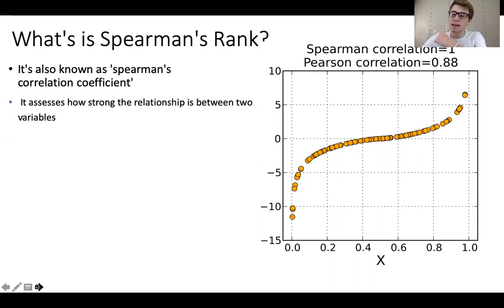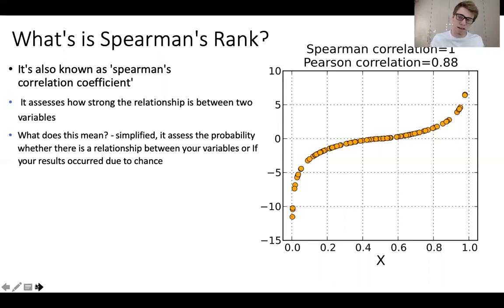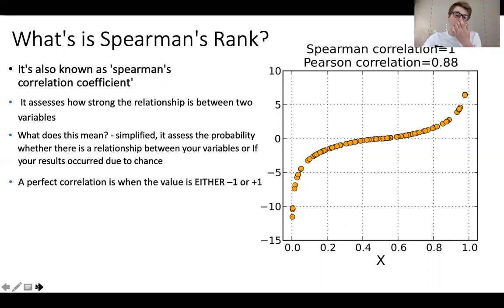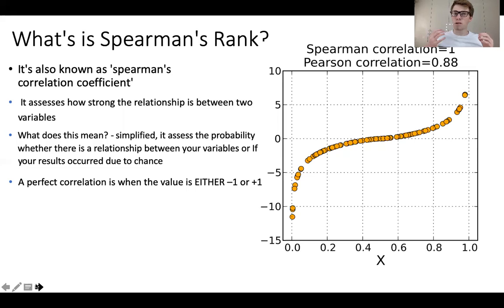Spearman's rank assesses how strong the relationship is between two variables — two things you're testing against on the graph. Basically, this test assesses the probability of whether the relationship you found on your graph is actually a real relationship, or whether your results have occurred by chance, meaning there is unlikely to be a relationship between those two values. When there is a perfect correlation in Spearman's, the value will be either minus one or plus one.